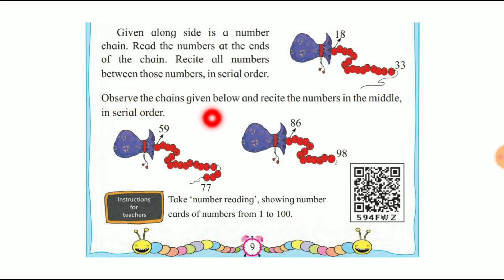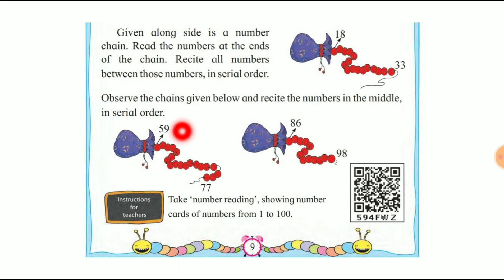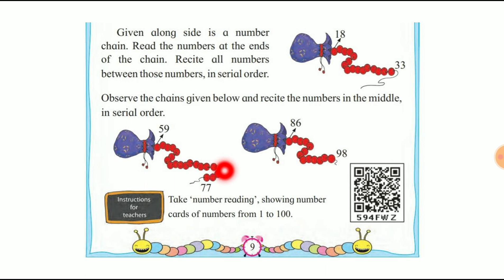Next, observe the chain given below and fill in the numbers in the middle in serial order. अभी यह जो numbers दिये हैं 59 to 77 — तो हम read करेंगे: 59, 60, 61, 62, 63, 64, 65, 66, 67, 68, 69, 70, 71, 72, 73, 74, 75, 76, 77. 77 is the last number and 59 is the first number in this chain.